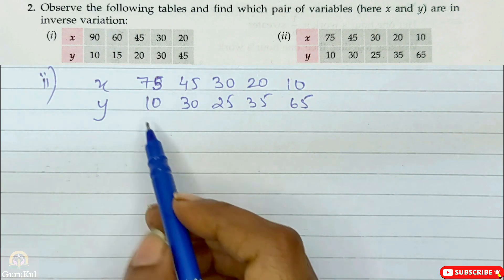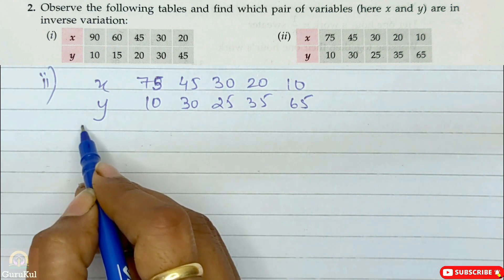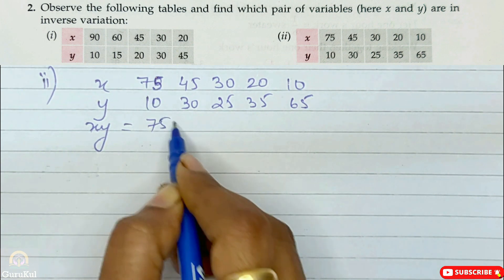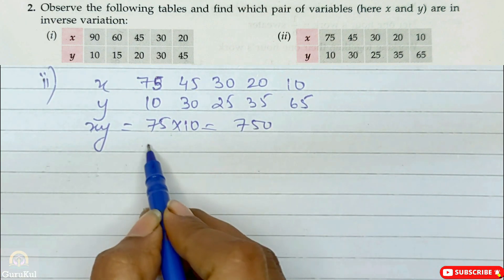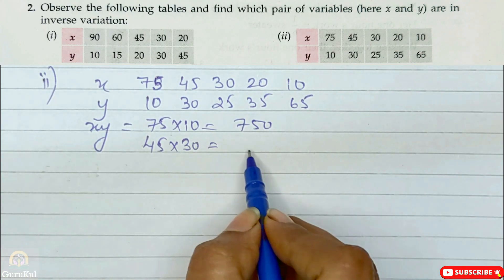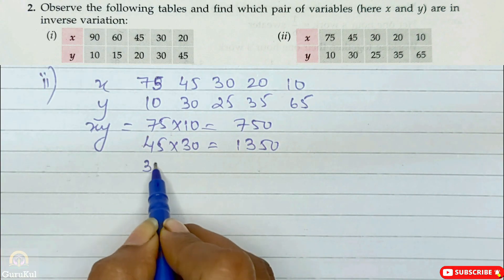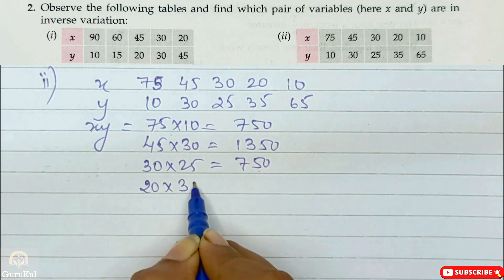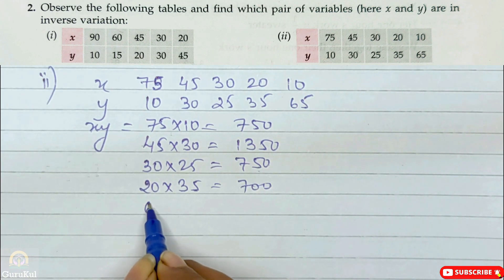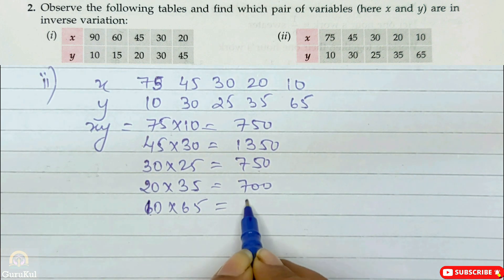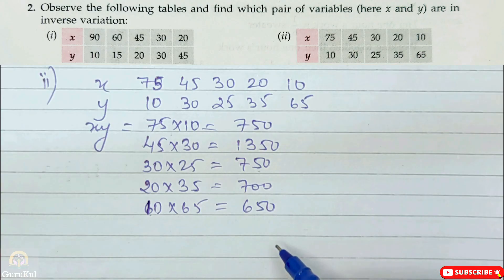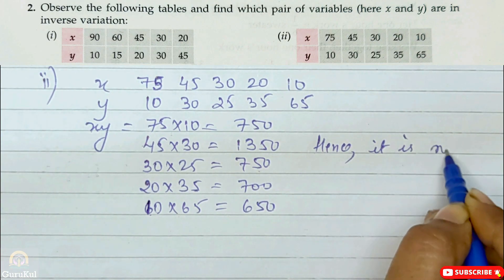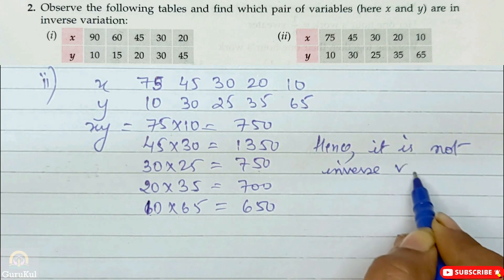Now part 2 of question number 2. We need to find whether this set of values is in inverse variation. Checking: 75 × 10 = 750; 45 × 30 = 1350; 30 × 25 = 750; 20 × 35 = 700; 10 × 65 = 650. The variation constant is not the same throughout. Hence it is NOT inverse variation.